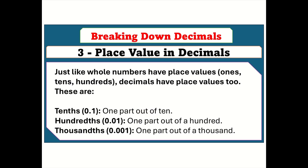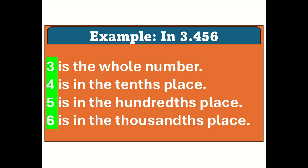Breaking down decimals — place value. Just like whole numbers have place values — ones, tens, hundreds — decimals have place values too. These are: tenths (0.1, 1 part out of 10), hundredths (0.01, 1 part out of 100), and thousandths (0.001, 1 part out of 1000). For example, in 3.456: 3 is the whole number, 4 is in the tenths place, 5 is in the hundredths place, and 6 is in the thousandths place.